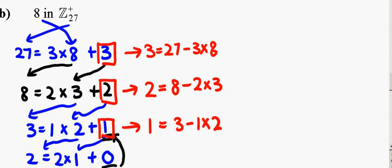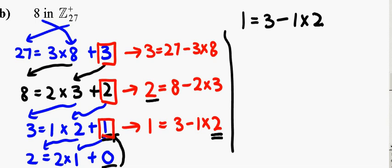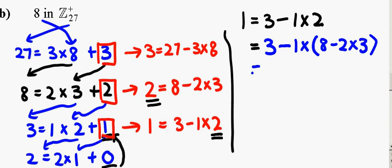So, now, working backwards for the extended Euclidean algorithm, from 1, which is equal to 3 minus 1 times 2, I will now replace the 2. This is equals to 3 minus 1 times 2, which equals to 8 minus 2 times 3. So, let me simplify this first.